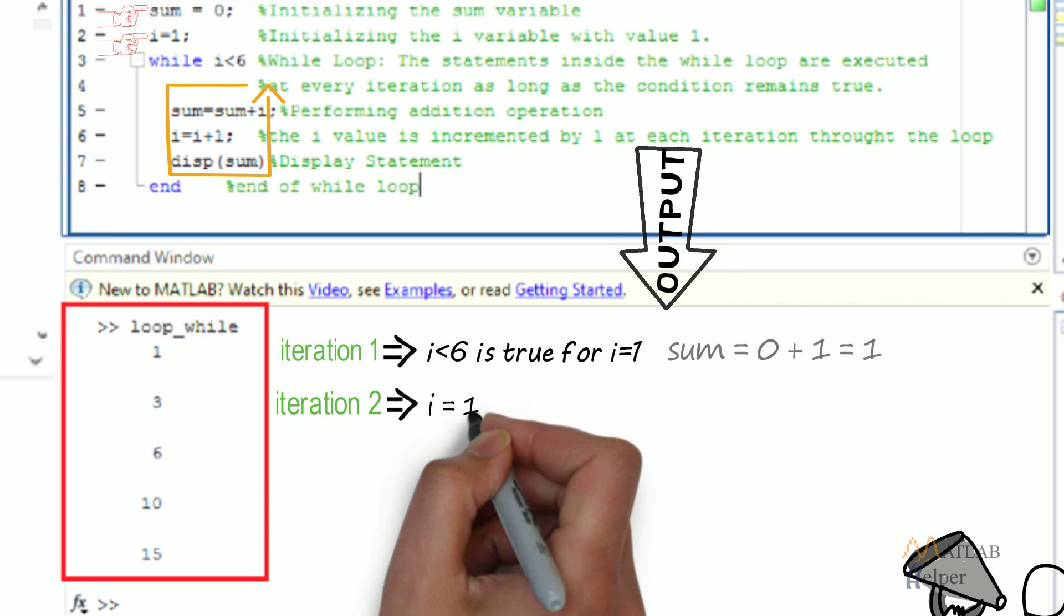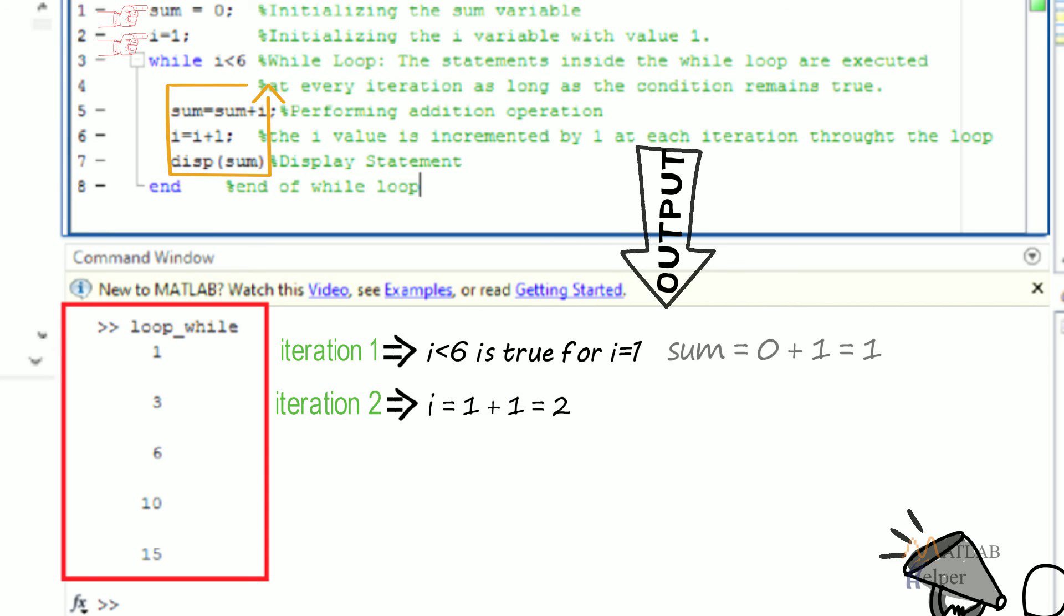i will be equal to 1+1=2. Now the value of i=2 and the expression is again checked, i<6, which is true.